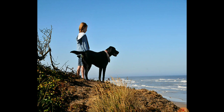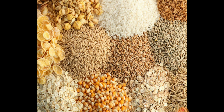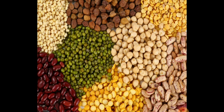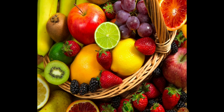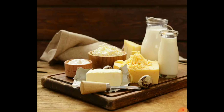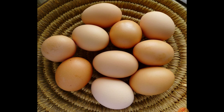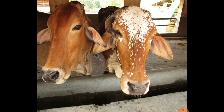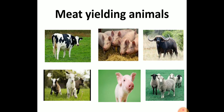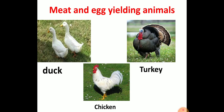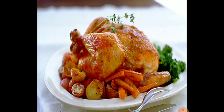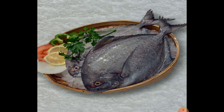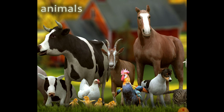We human beings are also animals. We obtain food like wheat, rice, pulses, vegetables, and fruits from plants. Food like milk, curd, cheese, and eggs are obtained from animals. Some people also eat meat, chicken, and fish. Meat is obtained from meat-yielding animals and eggs are obtained from egg-yielding animals.